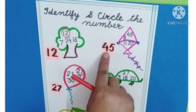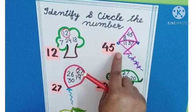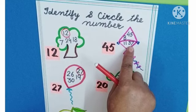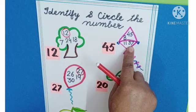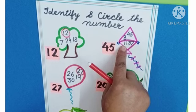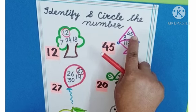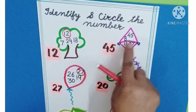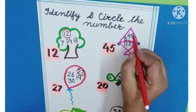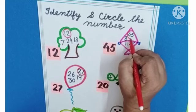Our next number is 45. Is this 45? No. Is this number 45? No. This is 11. Is this number 45? Yes, here it is. We will circle 45.